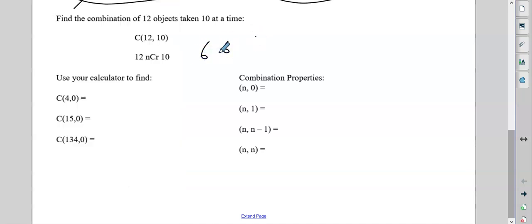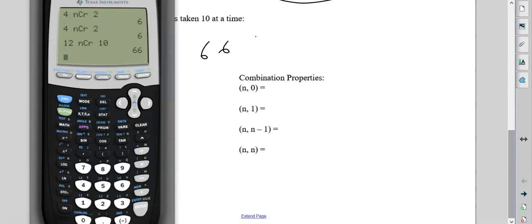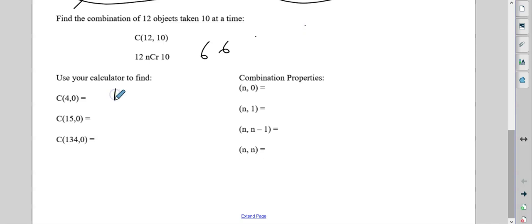Four NCR zero. So 4, math, PRB, 3, 0, one way. And I'm not going to do this again on the calculator. Notice what these have in common. They all three have 0.